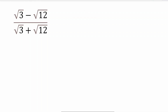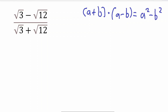There is a formula: (a + b)(a - b) = a² - b². Let's see how we can use this formula to simplify our denominator. We put our values into the corresponding variables: our a will be square root of 3, and our b will be square root of 12.